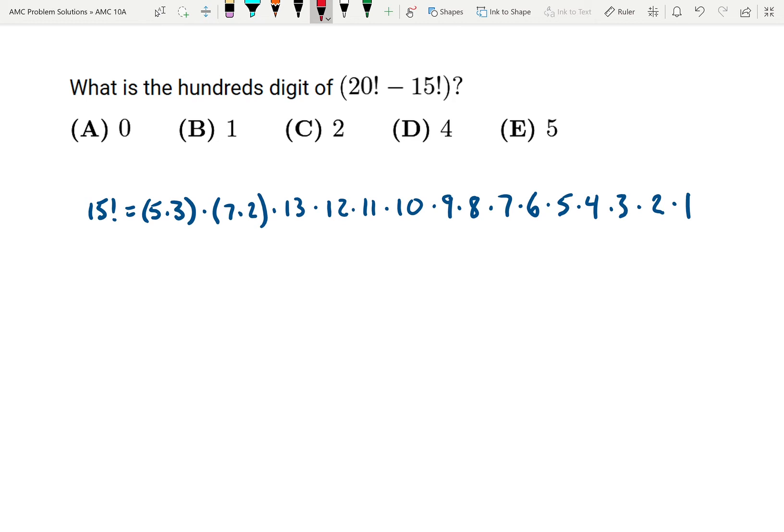Notice 5 times 3, there's a 5 there, and when I do 7 times 2, there's a 2 there. Similarly, there's a 10 right here, and there's another 5 and a 2 here. So if I combine that, 5 times 2 is 10, 10 is 10, and again 5 times 2 is 10.